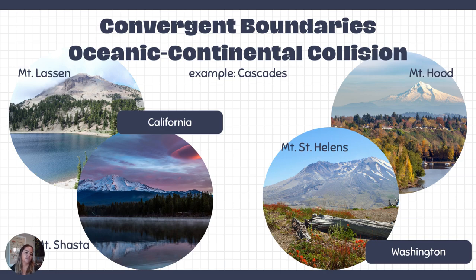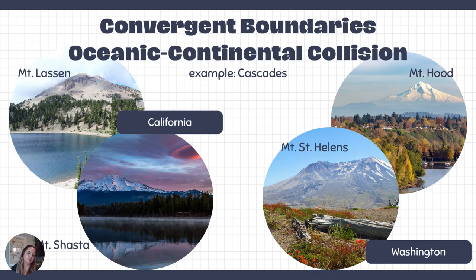We see this in the Cascades, which covers California, Oregon, and Washington. In California, Mount Shasta and Mount Lassen are part of this sequence. In Washington, there's Mount Hood, Mount St. Helens, and Mount Rainier. There are a lot of volcanoes in the Cascades.